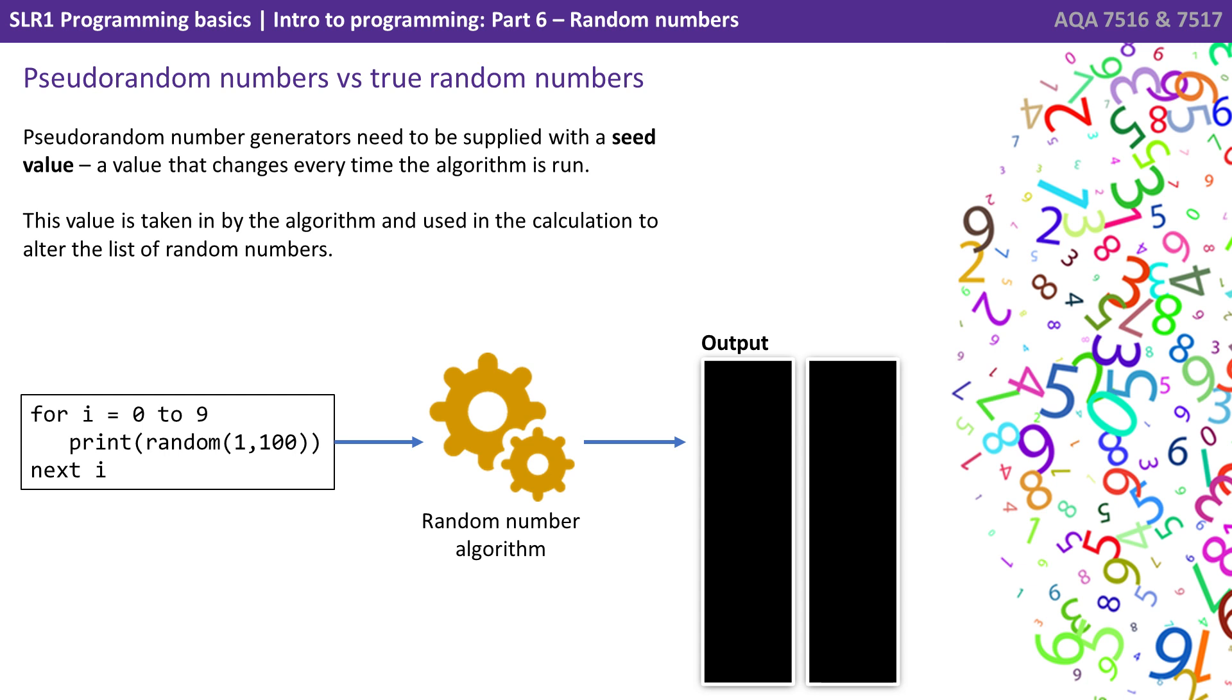Pseudo-random number generators need to be supplied with what we call a seed value. A value that changes every time the algorithm is run. This value is taken in by the algorithm and used in the calculation to alter the list of random numbers produced.